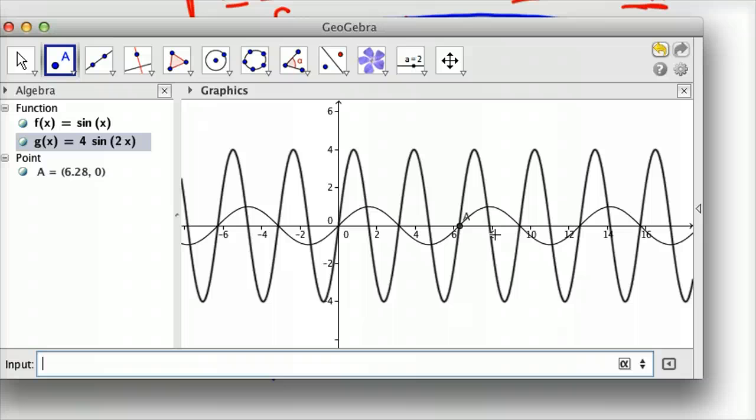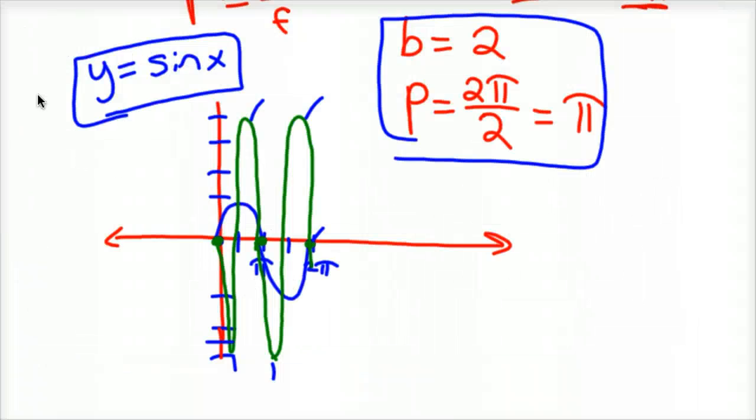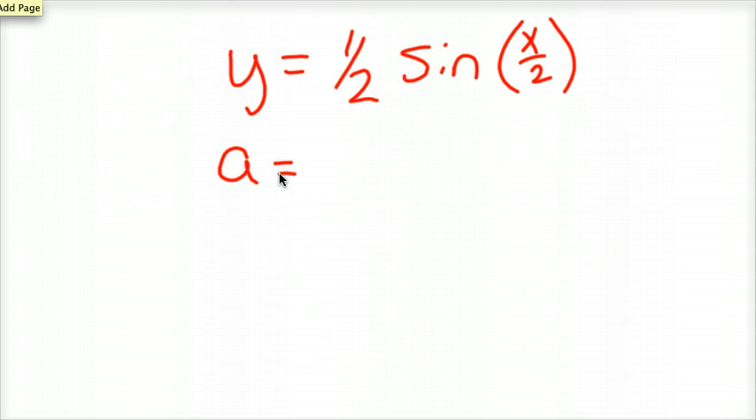Let me do one more example. I got a few more minutes, sorry. Let's go ahead and just give you one more example. Make sure you got it. So let's say I gave you y equals 1 half sine of x over 2. See if you know what this stuff is: amplitude, frequency, period.